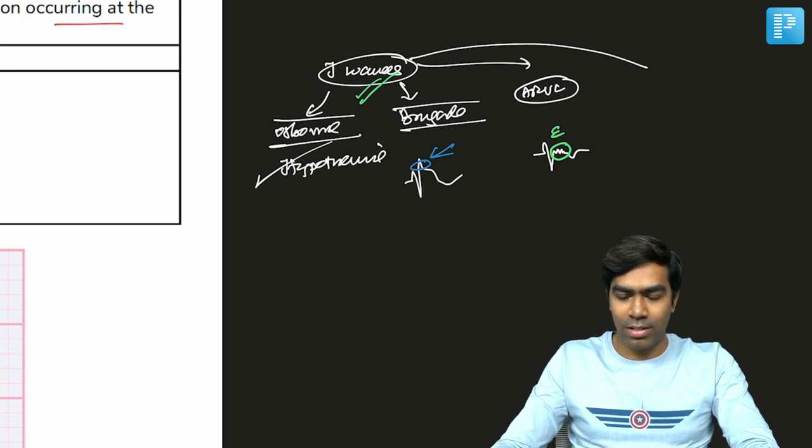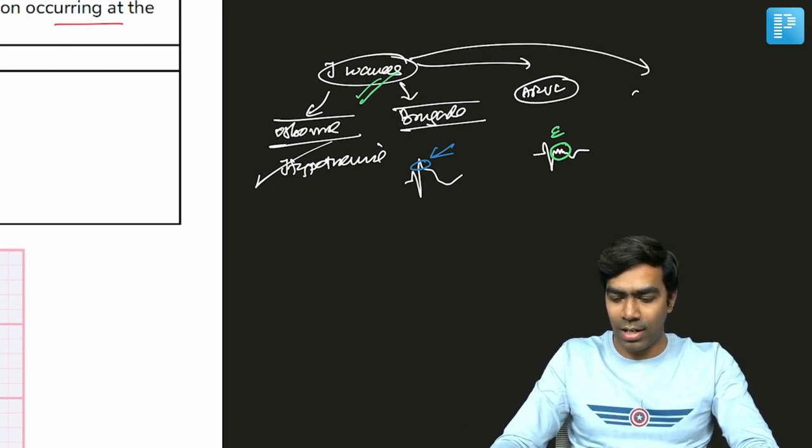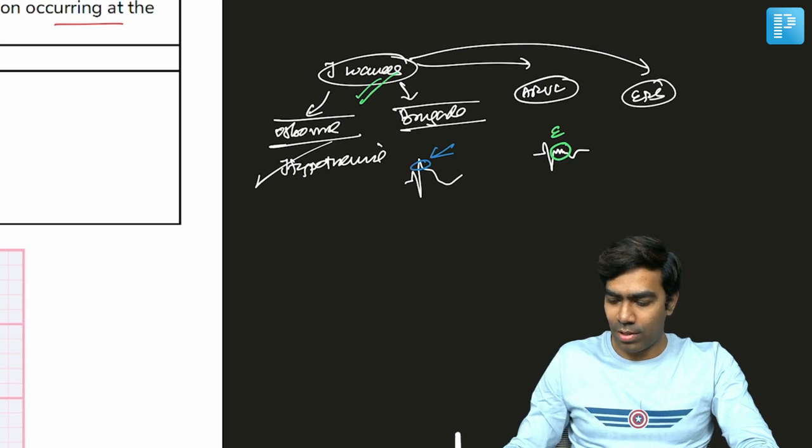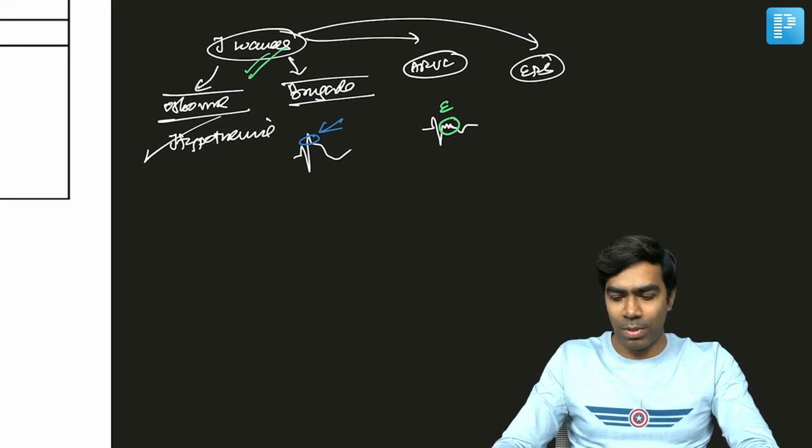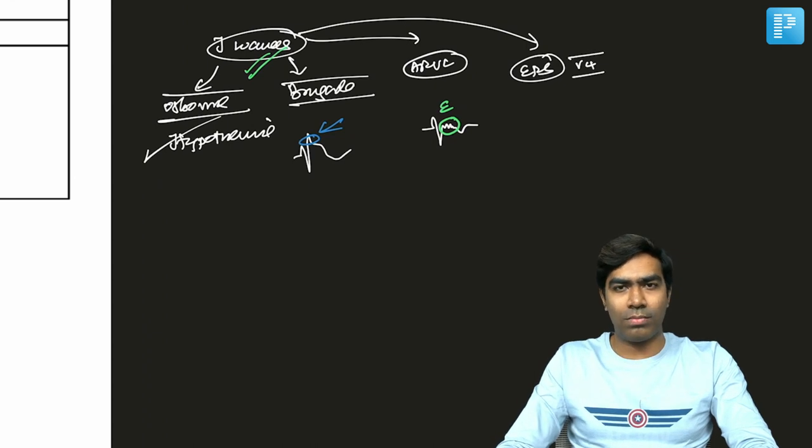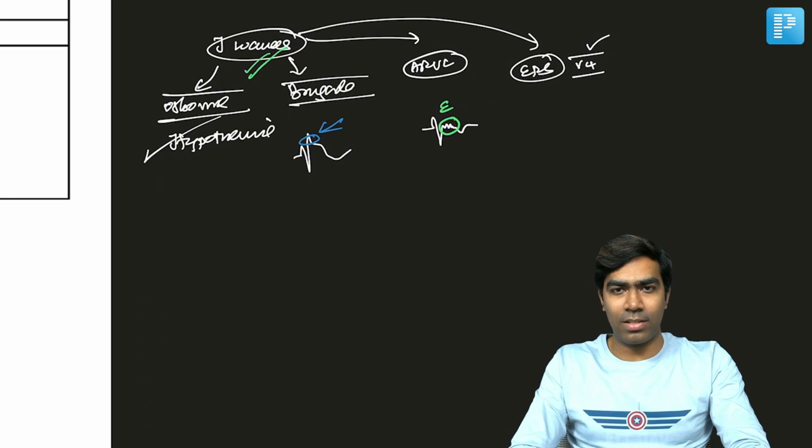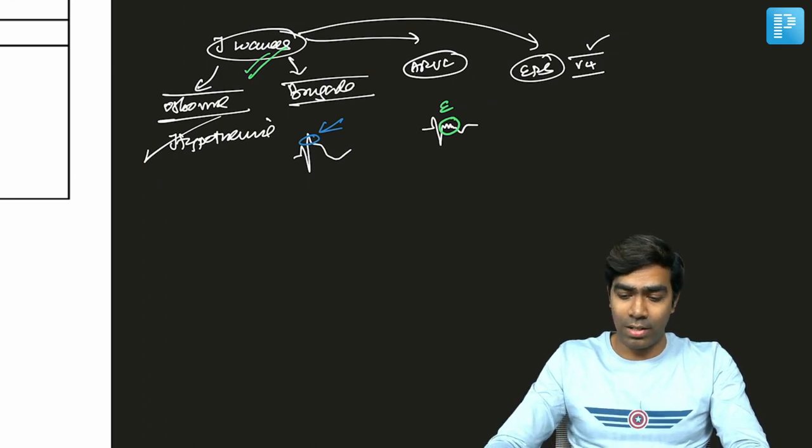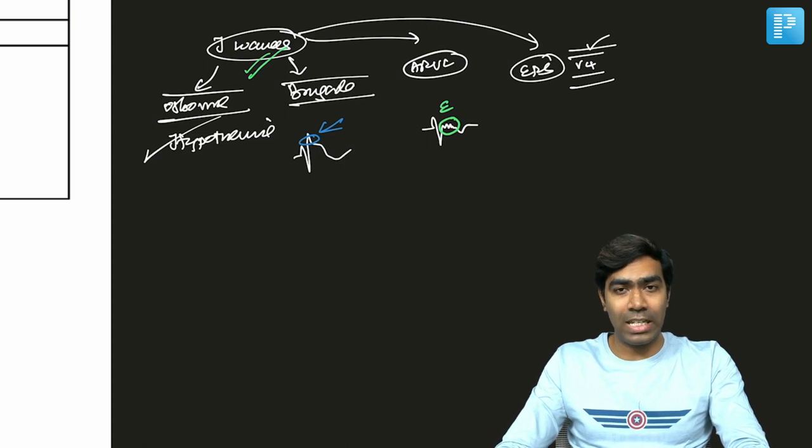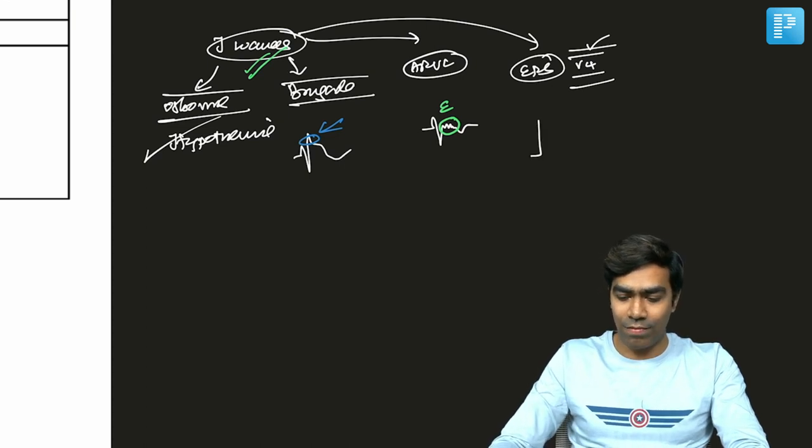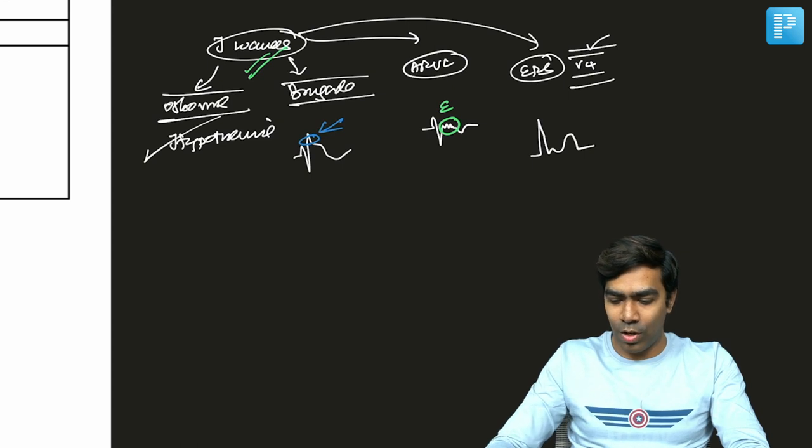And last but not least, we have something called Early Repolarization Syndrome, where your J waves will be very commonly located at V4. Even though if the J waves are located in the inferior waves, some studies say that the patient is at high risk of sudden death, but in most situations, you are going to see the J waves in the V4. And this is what we call it as the fish-hawk pattern.